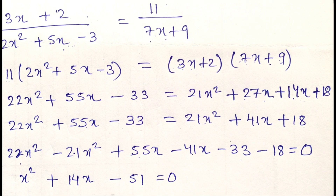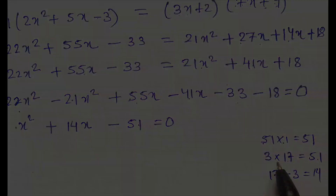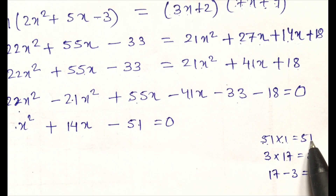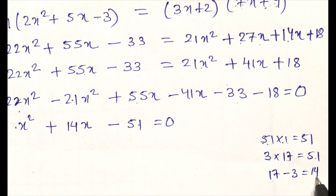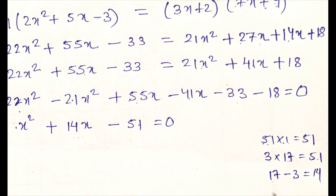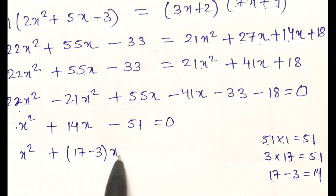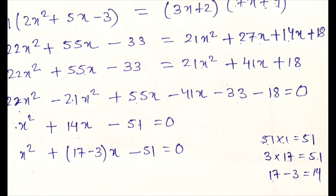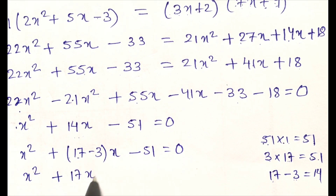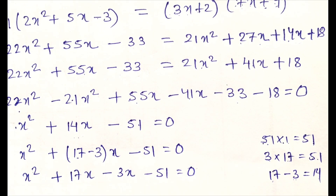Now we have to split the middle term. To split the middle term, we take the coefficient 1 and the number 51. We know that 3 × 17 = 51, and 17 - 3 = 14, which is our middle term. So in place of 14x, we write 17x - 3x. The equation becomes x² + 17x - 3x - 51 = 0.